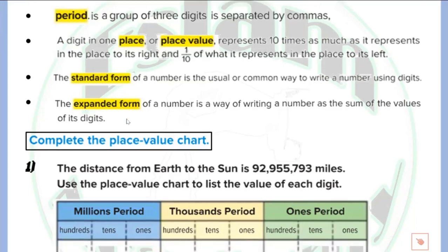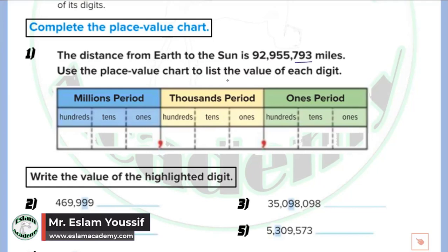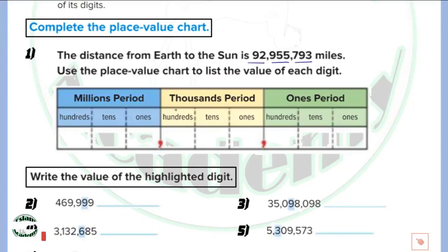We will start with the place value chart. In question number one, the distance from the Earth to the Sun is equal to a given number, and we need to read this number. To read it, we divide it into periods, where each period is formed from three digits. The first three digits form the ones period, the next three form the thousands period, and the last one is the millions period.